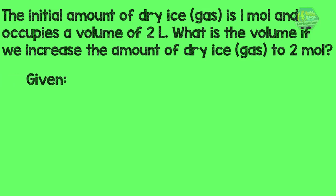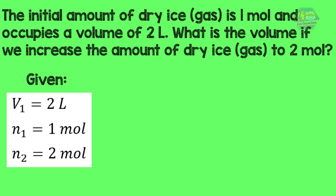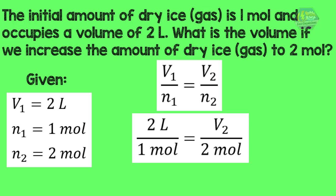We have V₁ = 2 L, n₁ = 1 mol, and n₂ = 2 mol. We are going to find the final volume. Hence, we substitute the known values to the formula. Solving for the final volume, we have 4 liters.